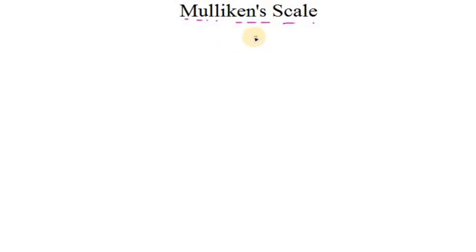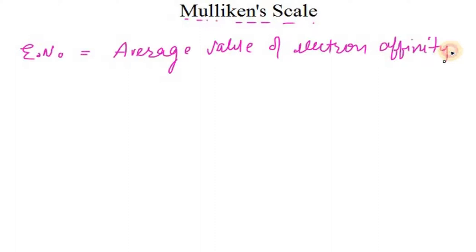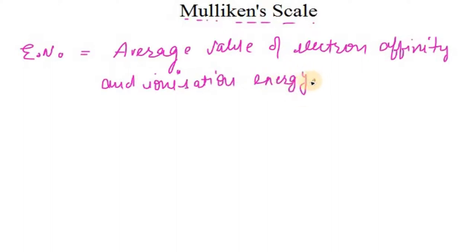Here we are going to discuss the Mulliken scale to measure the electronegativity of elements in the periodic table. According to this scale, the electronegativity of an element is equal to the average value of electron affinity and ionization energy. The energies are taken in electron volts.